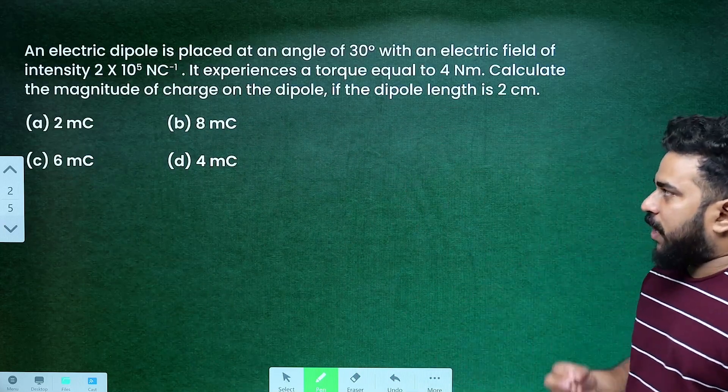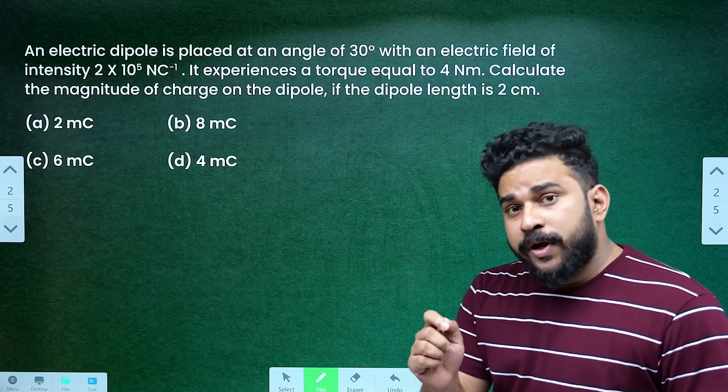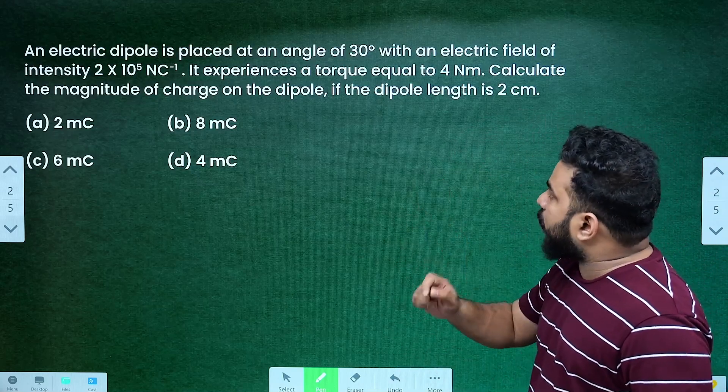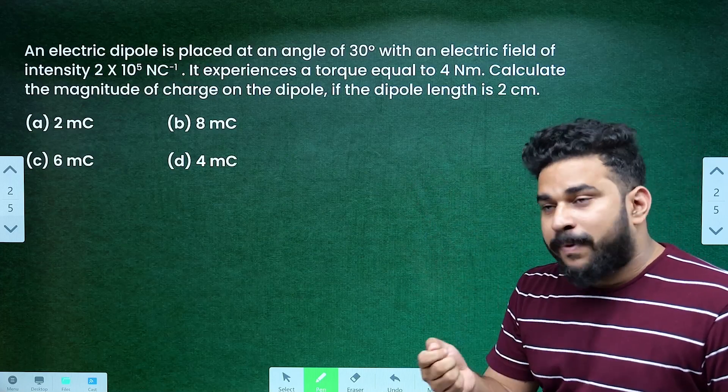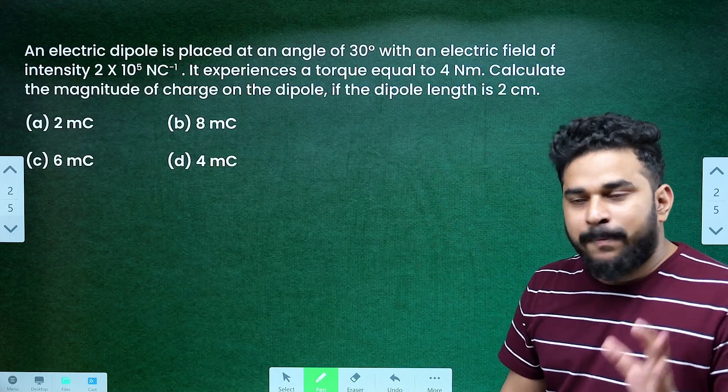An electric dipole is placed at an angle of 30 degrees with an electric field of intensity 2 into 10 raised to 5 N per C. It experiences a torque equal to 4 Nm. Calculate the magnitude of charge on the dipole, if the dipole length is 2 cm.